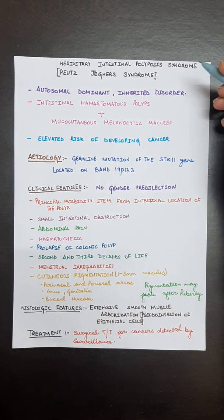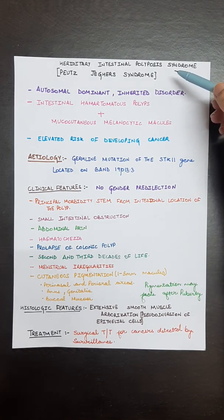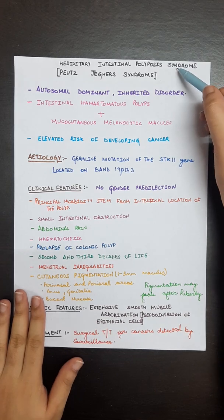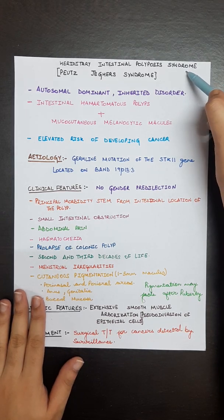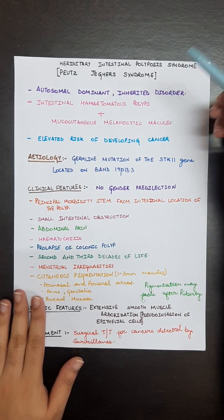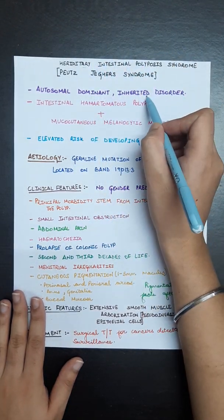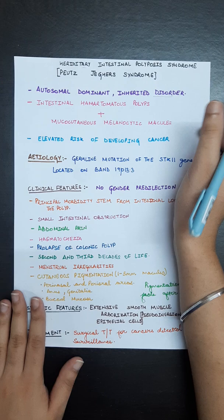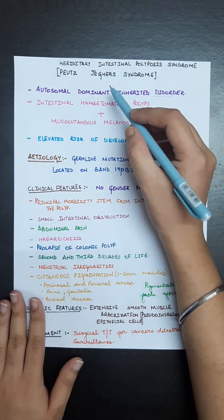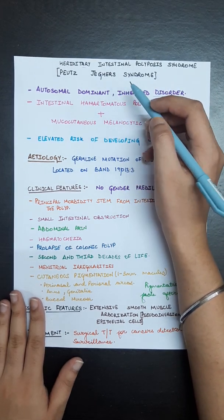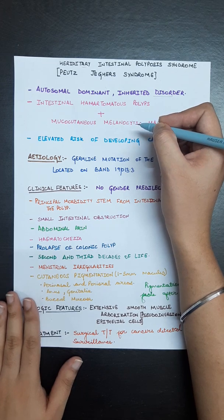Today we are going to discuss Peutz-Jeghers syndrome, which is also known as hereditary intestinal polyposis syndrome. As the name suggests, hereditary means it is an inherited disorder, autosomal dominant in nature.